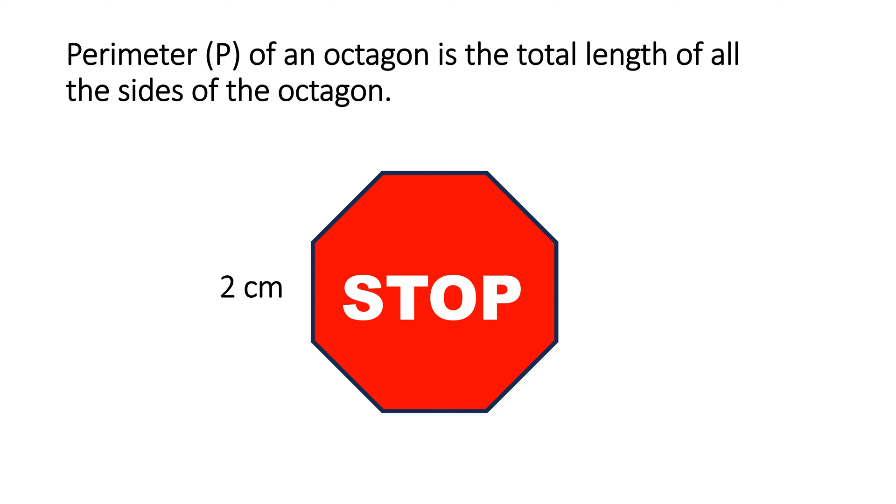We do the same thing for every other shape. When we want to find the perimeter of this octagon, we will add up all the sides. Since the sides of an octagon are all the same, we could take one side and multiply it by 8. Let's write out the formula.